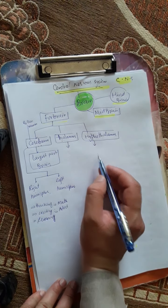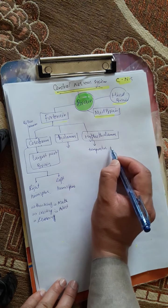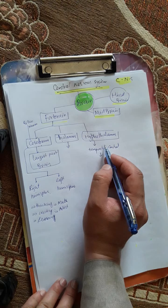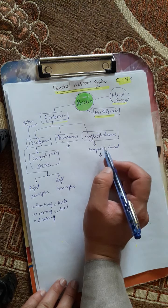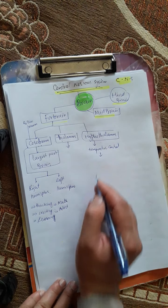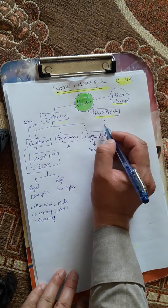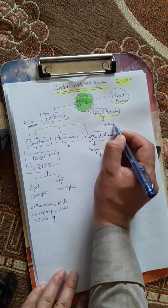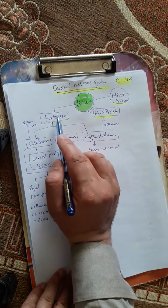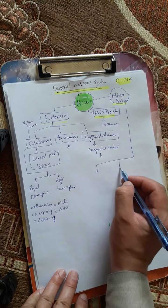The hypothalamus is the temperature control room. Body temperature is controlled with the help of the hypothalamus. The midbrain contains interneurons. The midbrain acts as a borderline between the hindbrain and the forebrain.